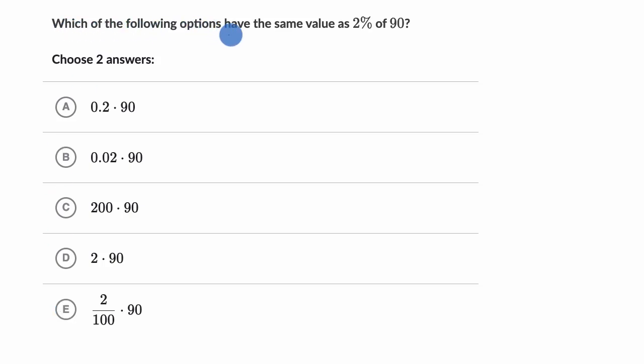We're asked which of the following options have the same value as 2% of 90. Pause this video and see if you can figure it out. As a reminder, they say pick two answers. All right, now let's work through this together.